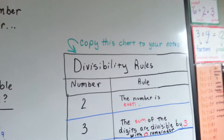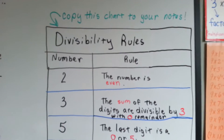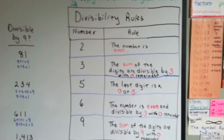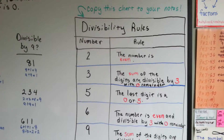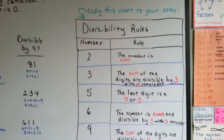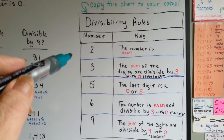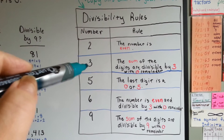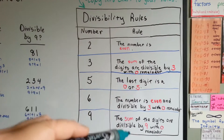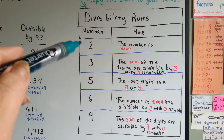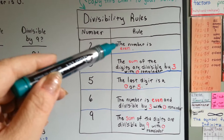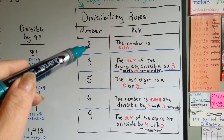Here is a chart that you're going to need to copy to your notebook. If you need to pause this to get your notebook, go ahead and do that. This is the chart of divisibility rules. Here are the rules for the numbers 2, 3, 5, 6, and 9. Here's the rule for number 2, which we just talked about: if the number is even, then you can divide it by 2.